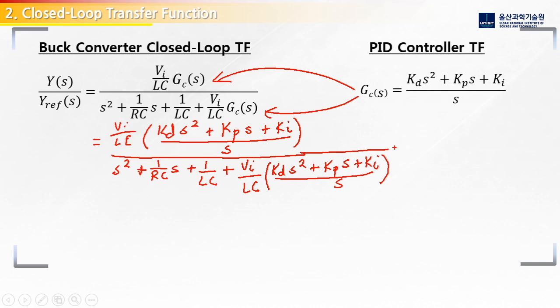So we have a lot of terms here, but first we are going to simplify by multiplying by s over s. So let's simplify our system here. And in the numerator, we are going to get Vi over LC multiplied by all of our terms here. So we have KD first, s squared. Then we have the same term, Vi over LC, KP s.